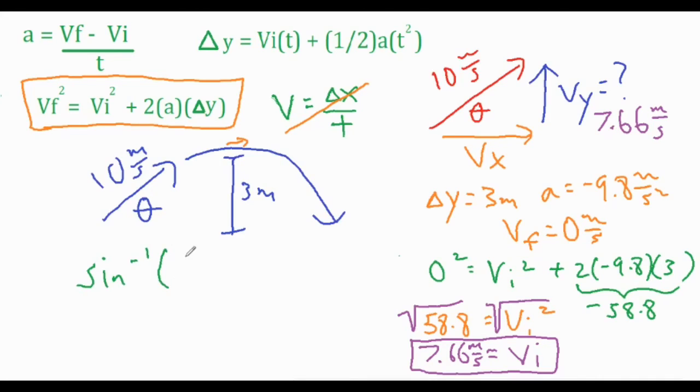So if we take the inverse sine of 7.66 over 10, that leaves us with our unknown angle. That's going to round off to 50.0 degrees.